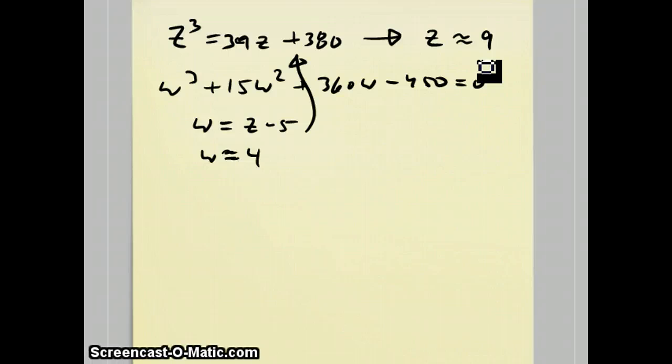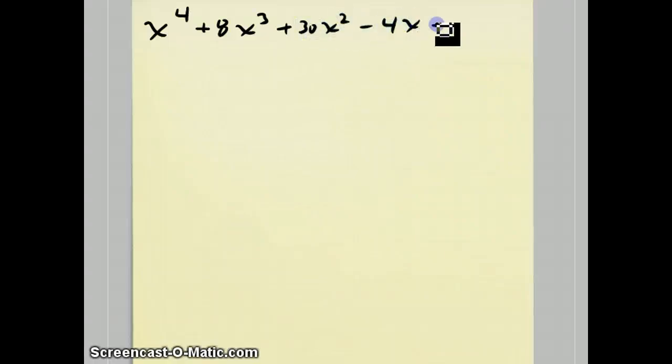Well, today, we go a little bit further into a general quartic equation. I'm going to use as my primary example this equation: x⁴ + 8x³ + 30x² - 4x - 44 = 0. This has two real solutions. One's about 1.1 and the other one's about negative 1.35.